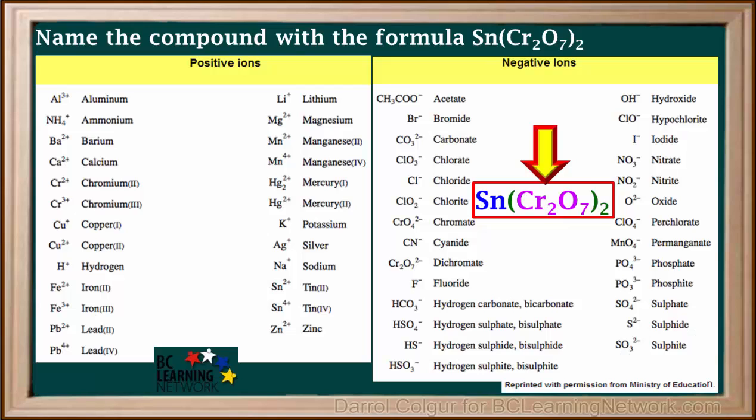So we look for polyatomic ions in the formula Sn(Cr2O7)2. We see that Cr2O7 with a negative 2 charge is called dichromate.